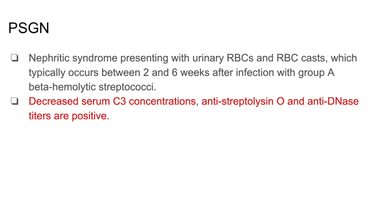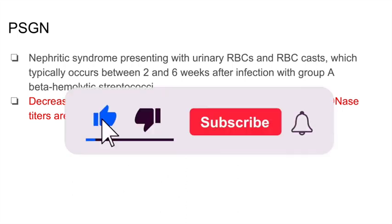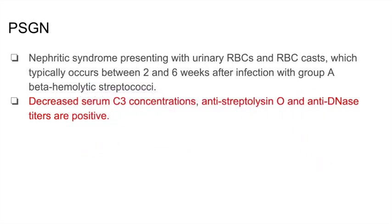They give you a patient — let's say a 6-year-old kid who had an infection 2 weeks ago and now has blood and casts in their urine. They ask what underlying mechanism or condition is this associated with. They can list type 3 hypersensitivity reaction or antibody-antigen complex, decreased serum C3 concentrations, as well as positive anti-streptolysin O and anti-DNase B.